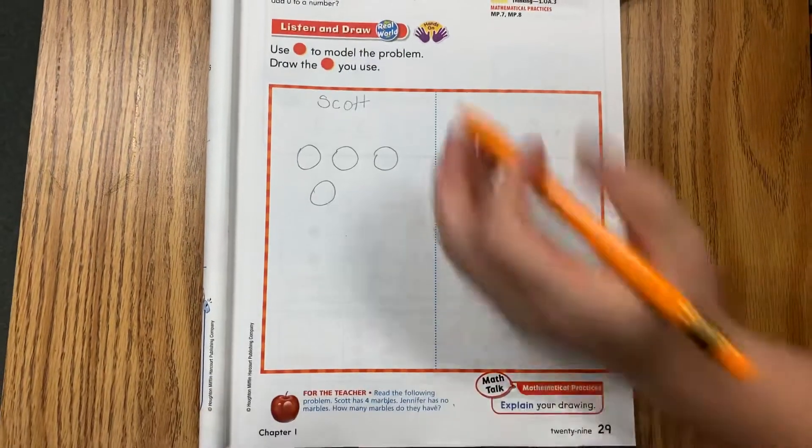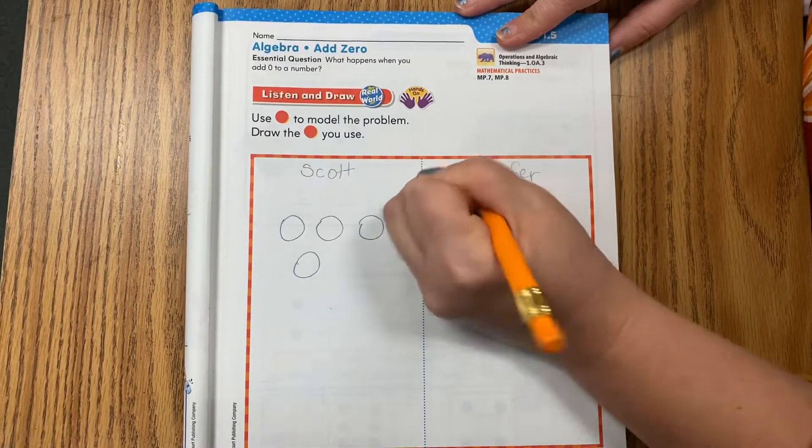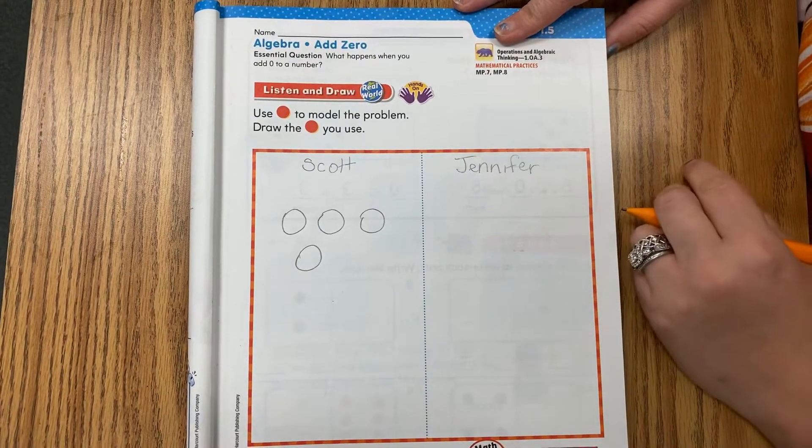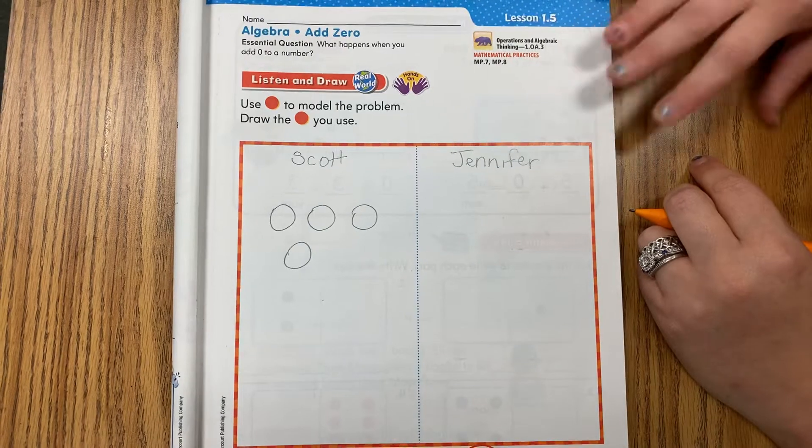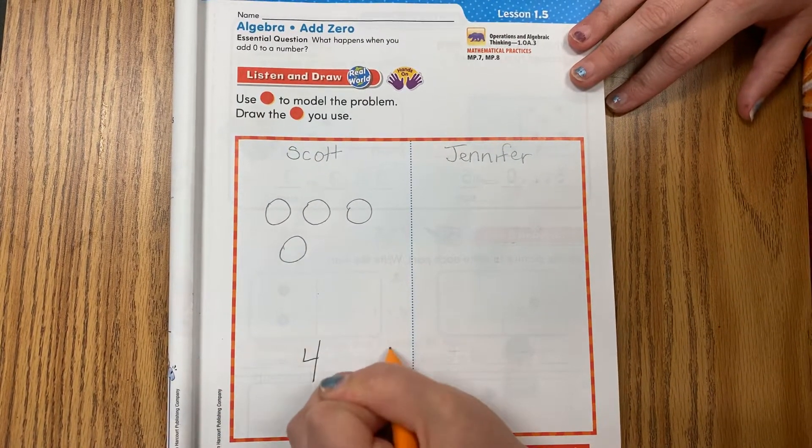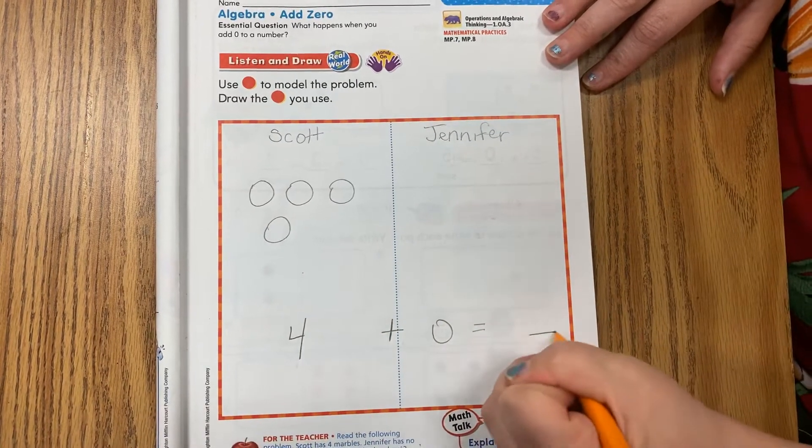Jennifer has no marbles. So Jennifer gets zero. Nothing goes here. How many marbles do Scott and Jennifer have together? So let's look. We have four marbles plus zero marbles equals blank.